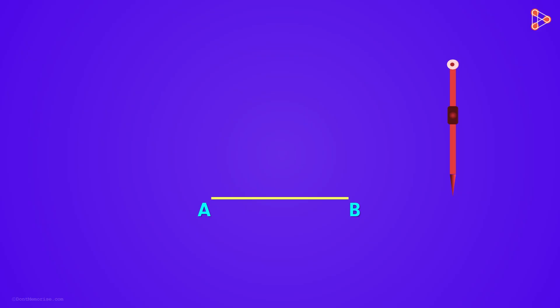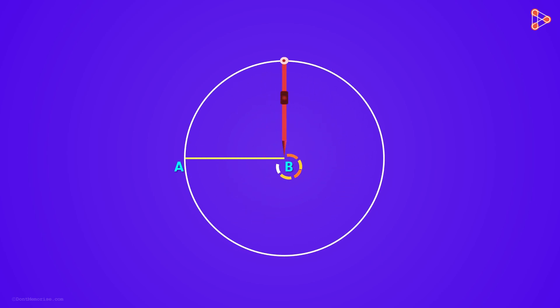We put the fixed point of compass on one of the points, say B. Now taking this line segment AB as the radius, we draw a circle with B as its centre.